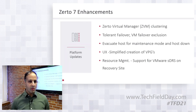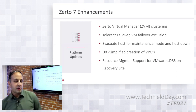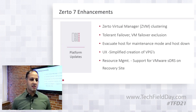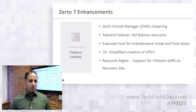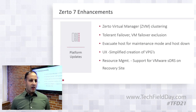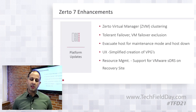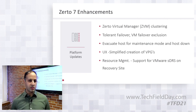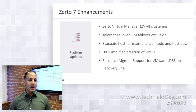We introduced fault tolerant failover. We have virtual protection groups, or VPGs — think of them as consistency groups where a number of VMs are aggregated and behave atomically as one unit, like a three-tier architecture with database, middleware, and front-end kept at the same point in time during failover. If one misbehaving VM was preventing the entire group from failing over, the fault tolerant feature allows that one item to be excluded so it doesn't block the entire failover.